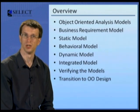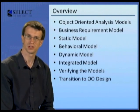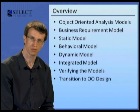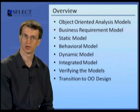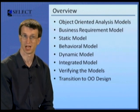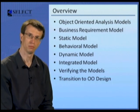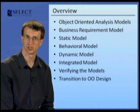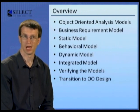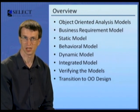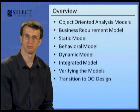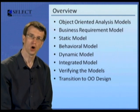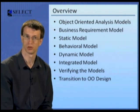In the following sessions, we'll cover the object-oriented analysis models — the different types of analysis models used to define how objects are identified, classified, and how they interact with other objects. The business requirement model: how requirements are described in a way that enables the identification of objects and their behaviours. The static model: how objects are identified, classified and related. The behavioural model: how objects interact in support of an activity. The dynamic model: how an object's behaviour is affected by its state. An integrated model: how the different models are integrated to ensure integrity. And verifying the models against the business requirement: how the object models can be verified to ensure they capture the correct scope and requirements.